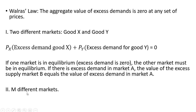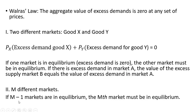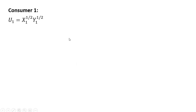If we have M different markets, Walras' Law states that if M minus one markets are in equilibrium, then we know that the Mth market must also be in equilibrium.